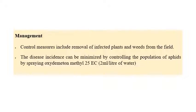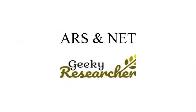For management of beet yellows, remove infected plants and nearby weeds from the field. To minimize the aphid population, spraying of oxydemeton-methyl at 25% EC at the rate of 2 ml per liter of water can effectively control the insects and thereby control the disease. Since insects are the main vectors for this disease, it is better to concentrate on controlling the insect population.